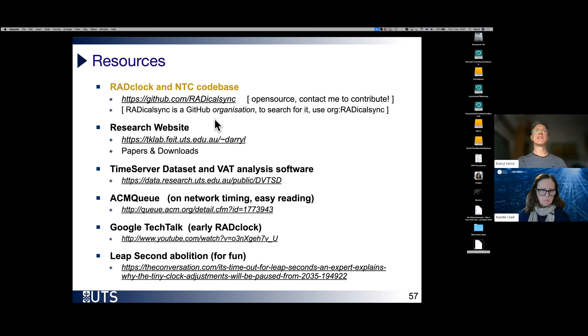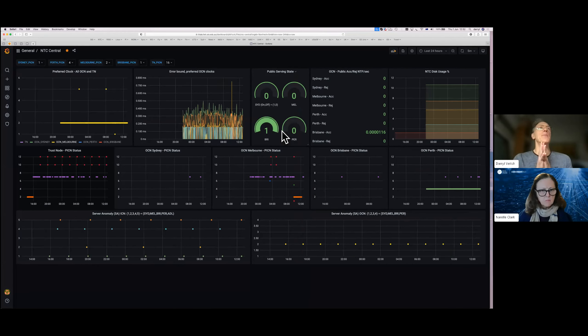So, this is a picture of a dashboard called NTC Central, which is like a central summary of what is happening across the testbed. The nice thing about this testbed is it's constantly running, so I can do a demo at any time, because it's always on. It makes it particularly easy to come up with a demo. Just briefly, what do we have here? We have disk usage here, so we're keeping an eye on all the four OCNs and also the trust node.